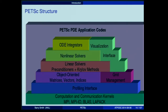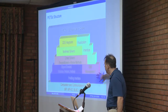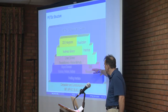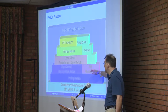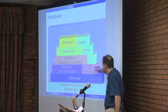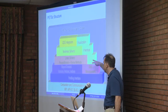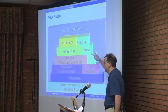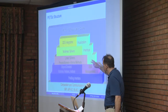Here's an overview of the organization of PETSc and where it lives in the HPC ecosystem. At the low level, we use MPI, MPI-IO, BLAS, and LAPACK as kernels. Above that is a profiling interface that everything else feeds into, so when you make runs you can get detailed information about where time is being spent. Above that is code for managing vectors, matrices, and grid management. Above that are linear solvers consisting of preconditioners and Krylov methods. Above that are nonlinear solvers, and above that are ODE integrators.